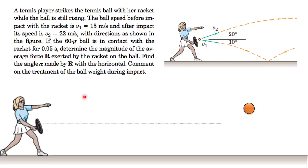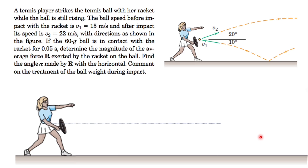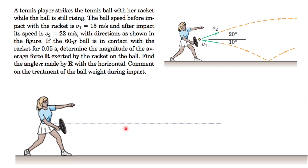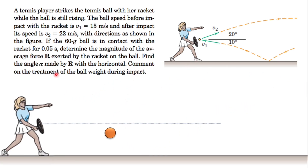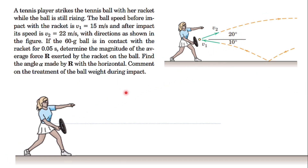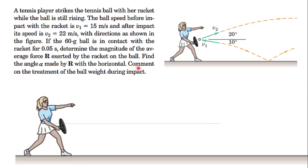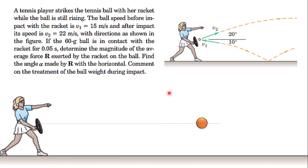In this video we'll see the principles of linear impulse and linear momentum regarding a statics problem. A tennis player strikes the tennis ball with her racket while the ball is still rising. The ball speed before impact with the racket is 50 meters per second, and after impact is 22 meters per second with the direction as shown in the figure. The 60-gram ball is in contact with the racket for 0.05 seconds. Determine the magnitude of the average force exerted by the racket on the ball, find the angle alpha made by R with the horizontal, and comment on the treatment of the ball weight during impact.